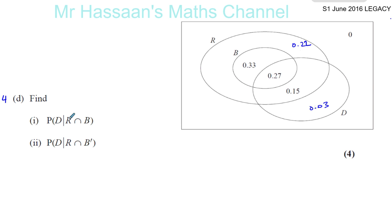It says find the probability of — and now it's got this weird kind of notation here. What this means is the probability of D given R intersection B. That's a conditional probability. So we're only looking at those people who are in R intersection B — those people who booked a room and who booked breakfast — and we want to find the probability that they have also booked dinner.